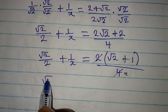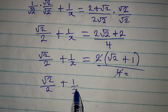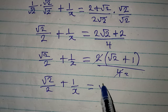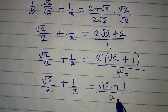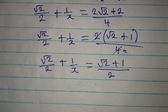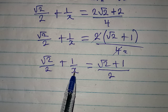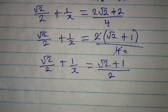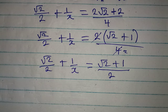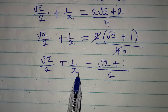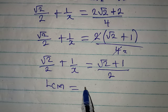So we have root 2 over 2 plus 1 over x equals root 2 plus 1, all over 2. We are looking for the value of x, and from this point we can find the LCM of everything. The LCM of 2, x, and 2 is equal to 2x.